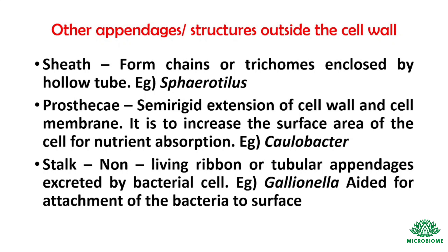Other appendages or structures outside the cell wall include: sheath, which forms chains or trichomes enclosed by a hollow tube — example: Spirotillus. Prosthecae, which are semi-rigid extensions of the cell wall and cell membrane that increase the surface area of the cell for nutrient absorption — example: Caulobacter. And stalk, which is a non-living ribbon or tubular appendage excreted by bacterial cells — example: Gallionella. Stalks aid in the attachment of bacteria to surfaces.